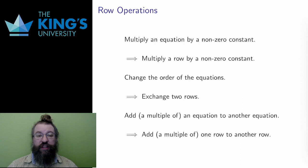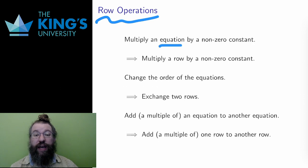All three of these operations can be expressed as operations on the matrix. Since the equations became rows, these operations are called row operations. Instead of multiplying an equation by a constant, I multiply a row by a constant.